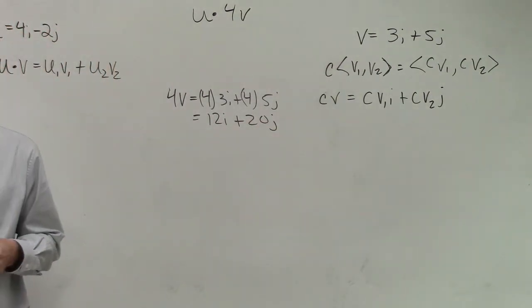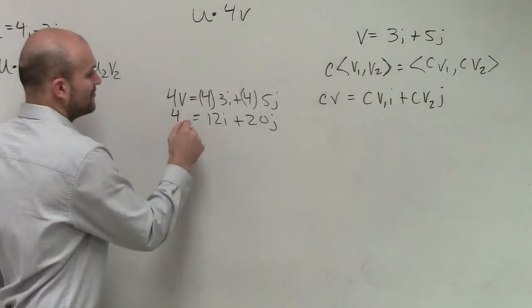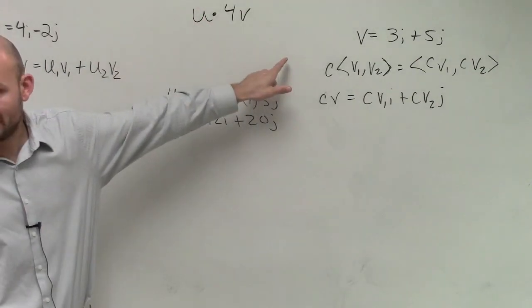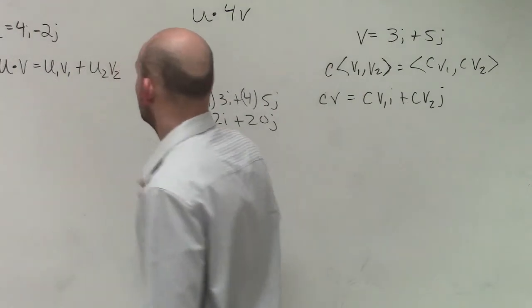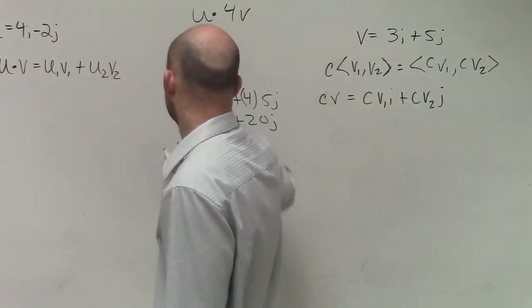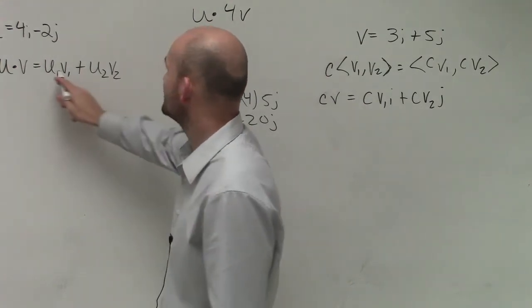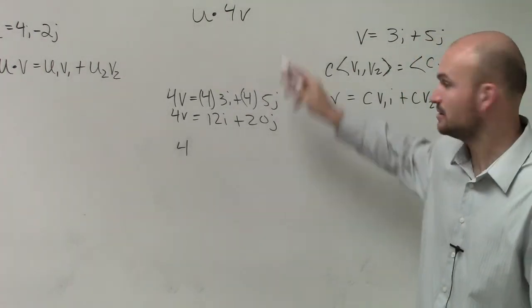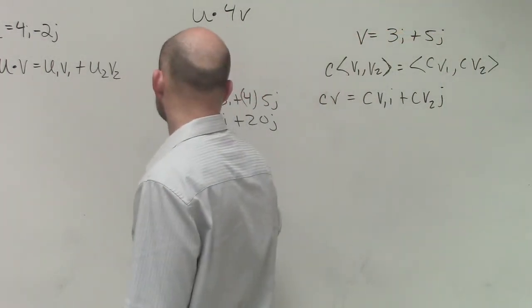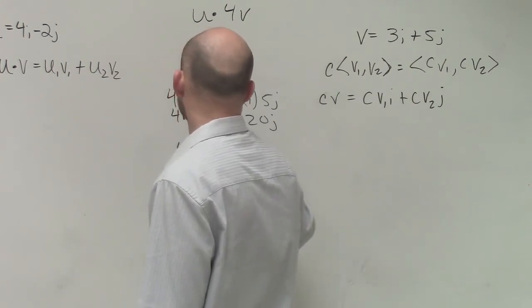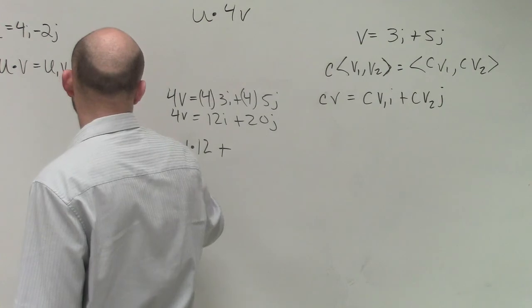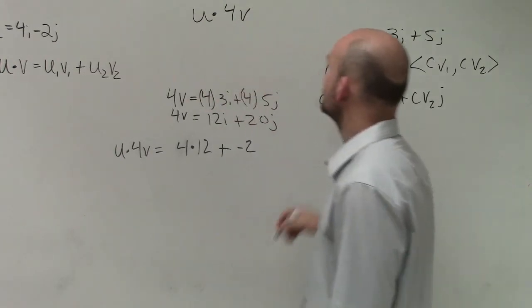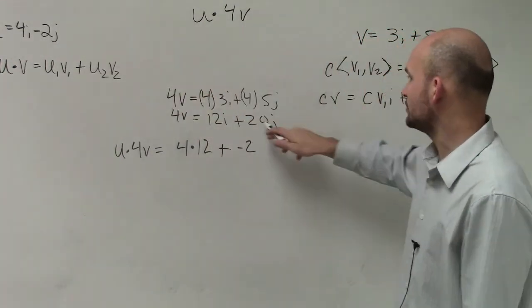This is what 4v equals. Now I'm going to do the dot product with u·4v. So to do the dot product, I'm going to do u1, which is 4, times v1. Well, we're not using v1 here. We're using 4v1, which ends up being 12. And then plus, so u·4v. Then we're doing u2, which is negative 2, times 4v2, which is 20.